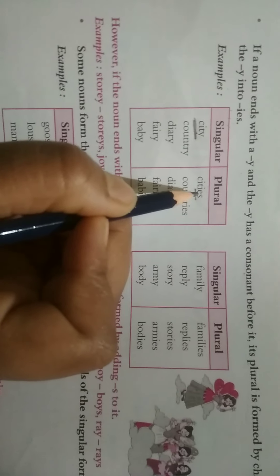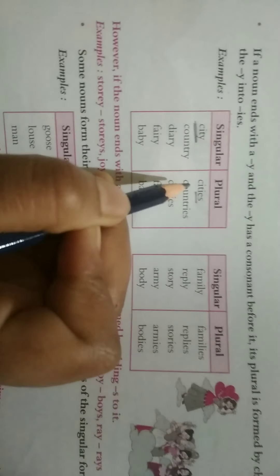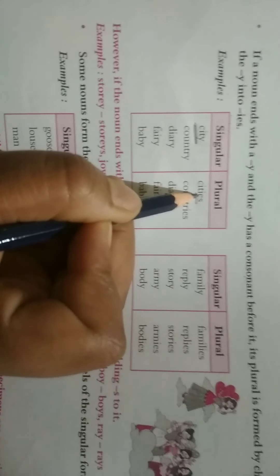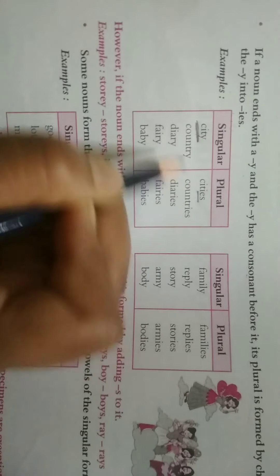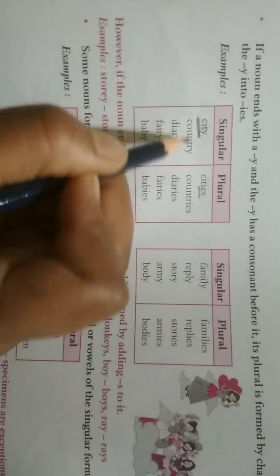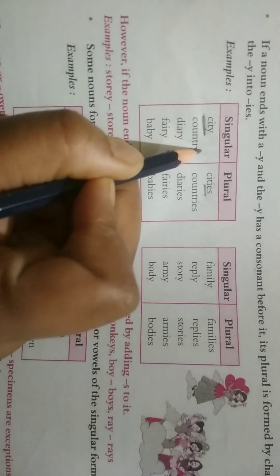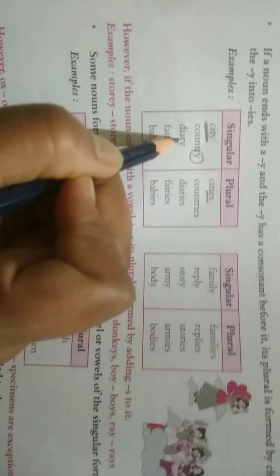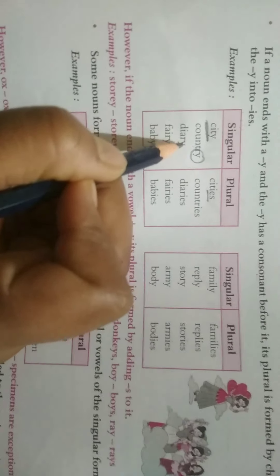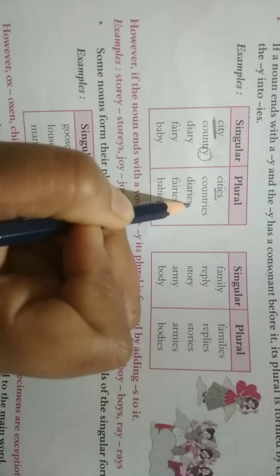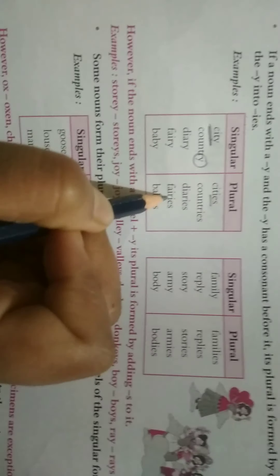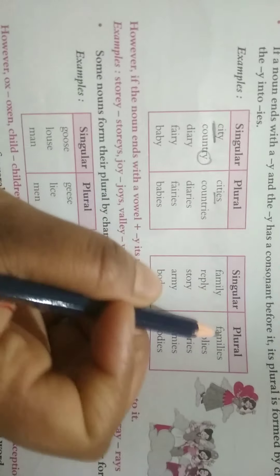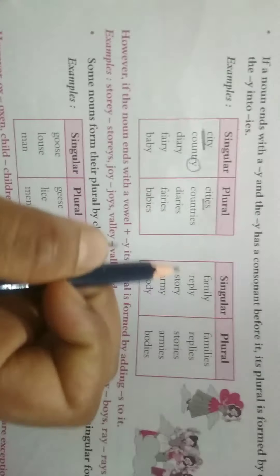So how will you convert it into plural form? You will convert it into plural form by adding I-E-S in the end. Similarly, with country, here, Y. So, R-I-E-S. Diary. Y. D-I-A-R-I-E-S. Fairy. Fairies. Family. Families. Okay?